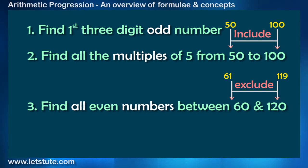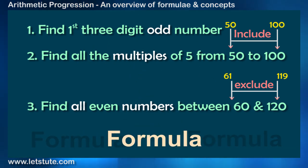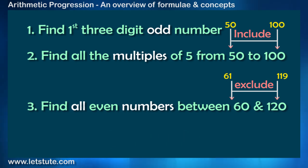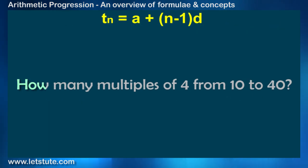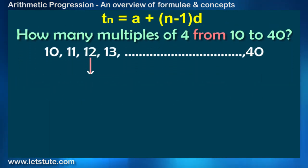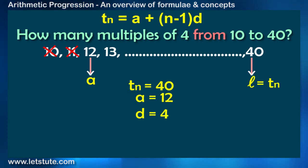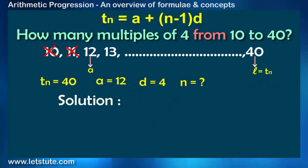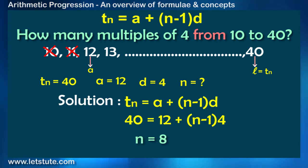To calculate the number of terms we again have a formula. But don't worry, we are not going to introduce a new one. The formula of Tn only is used to calculate the number of terms. For example, how many multiples of 4 from 10 to 40. So the first multiple is 12 because 10 cannot be divided by 4. And the last multiple is 40, right? So take Tn which is 40, A as 12, and D equals 4 and find out n. So you get n equals 8.